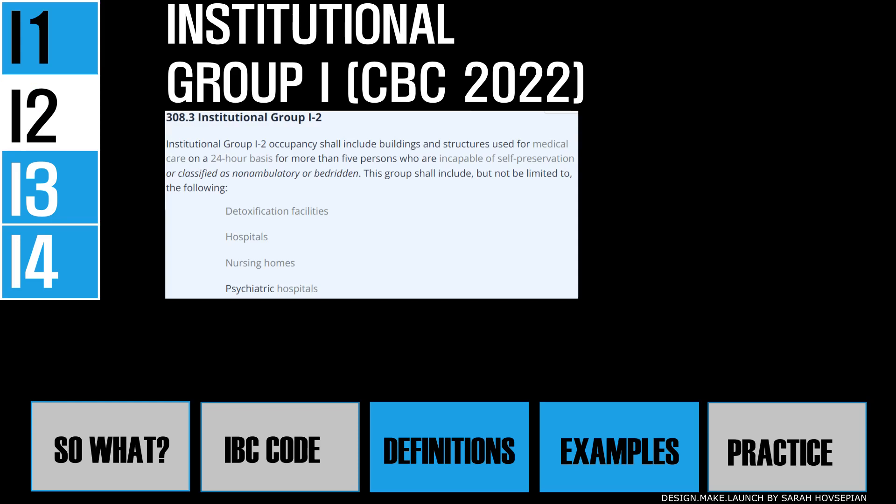Institutional group I2 has greater than five occupants living under supervised custodial care on a 24-hour basis. These occupants cannot respond to emergencies without staff assistance. This group includes hospitals, detox facilities, and nursing homes. 24-hour child care for more than five children at two and a half years of age or less may also fall under the I2 classification.